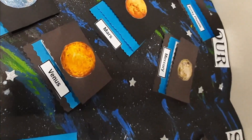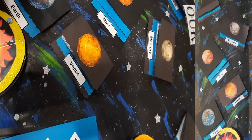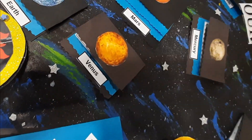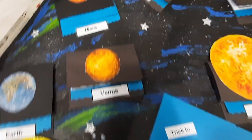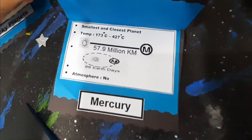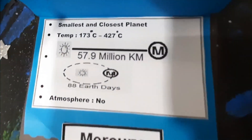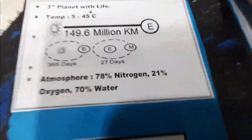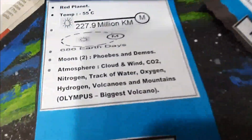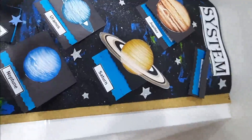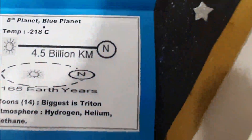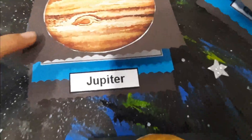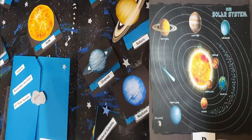There are four rocky planets: Mercury, Venus, Earth, and Mars. Mercury is closest to the Sun. Here I have mentioned a few pieces of information about each planet. These four are gas giant planets. Jupiter is the biggest planet in the solar system.